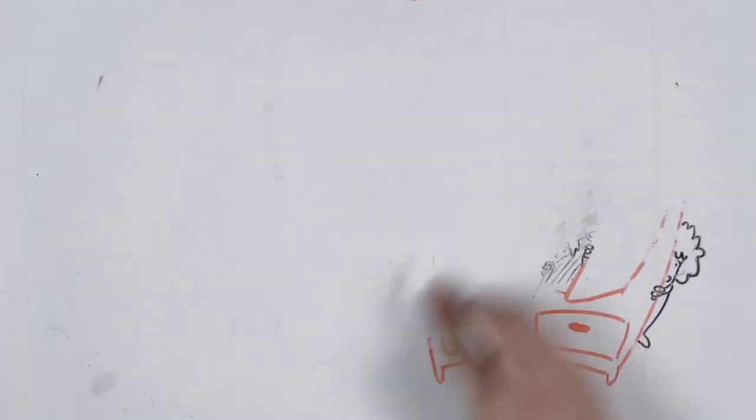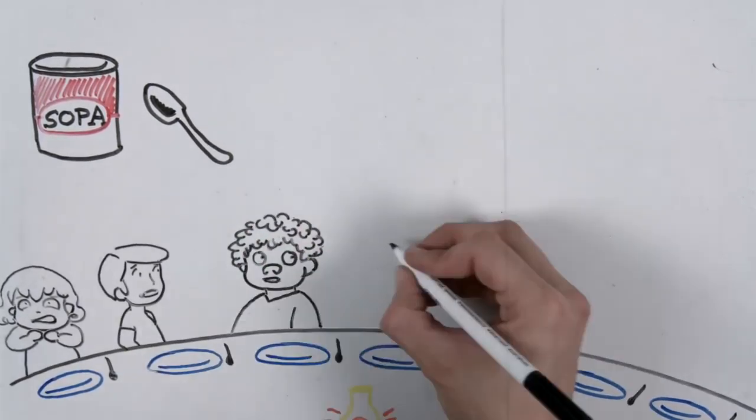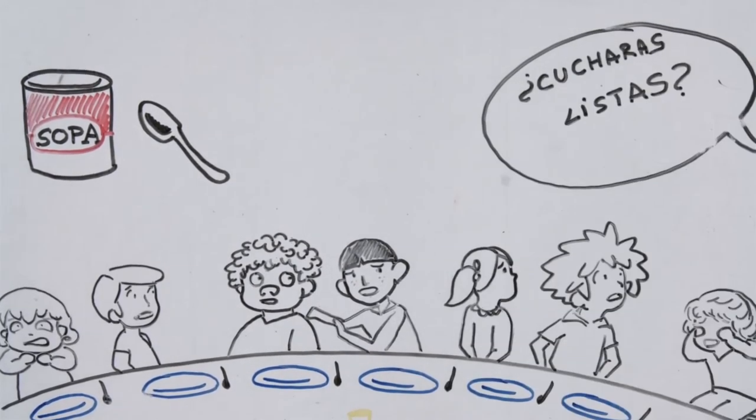Elliot also remembers a show about a can of soup and a spoon swinging back and forth. The ending showed seven kids sitting around the table, each with a bowl of soup in front of them. They all looked confused and scared. The cameraman said, spoons ready? And then it just stopped.